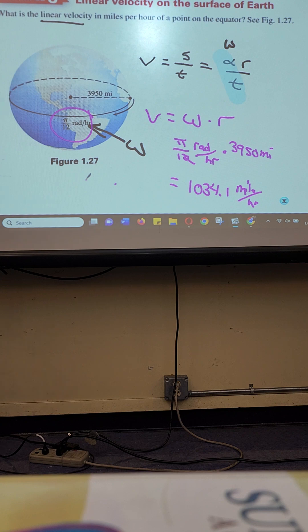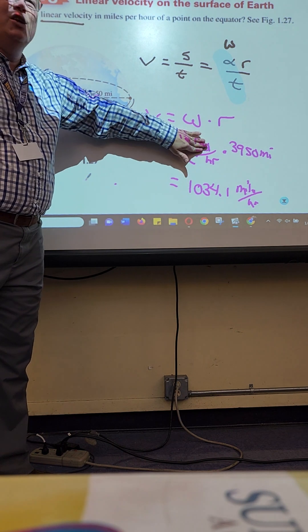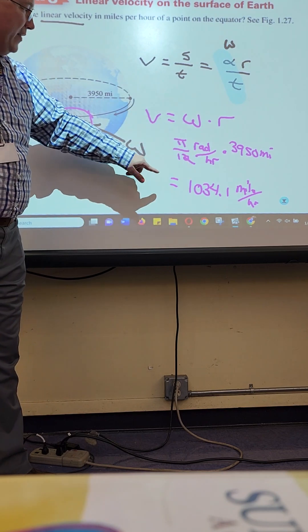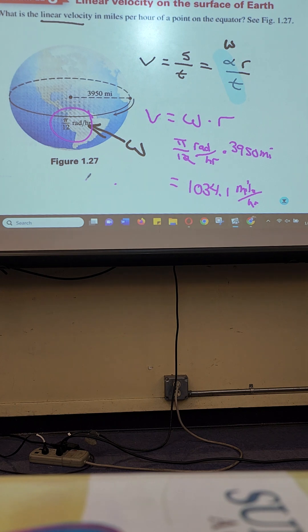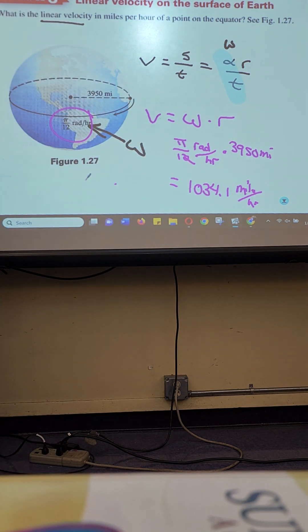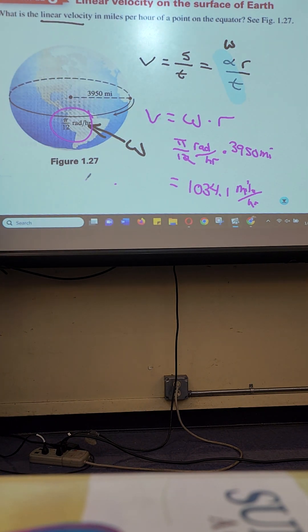On these linear velocity problems, they're just ignoring the radian in the problem — the book simply ignores it, and I don't have a good answer as to why. My guess is that on angular velocity the word radian is part of the angle, but on linear velocity we're not focused on the angle, we're focused on the distance. Since we're not talking about the angle, they're leaving the radian off — that's the best I can do right now.